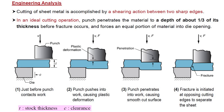Cutting off sheet metal is accomplished as follows. In an ideal cutting operation, the punch penetrates the material to a depth of about one-third of its thickness before fracture occurs, and forces an equal portion of material into the die opening. This diagram depicts this phenomenon in stages.